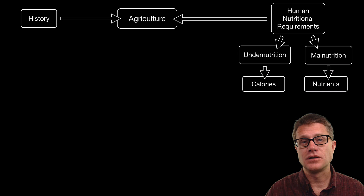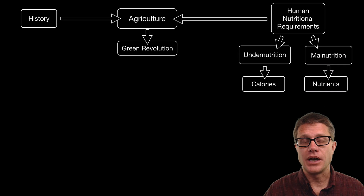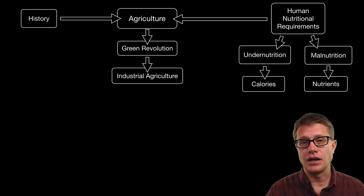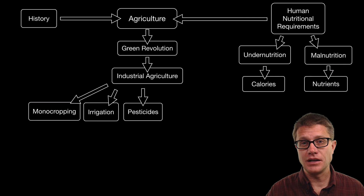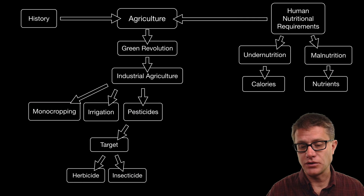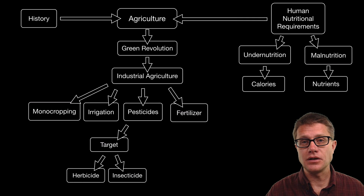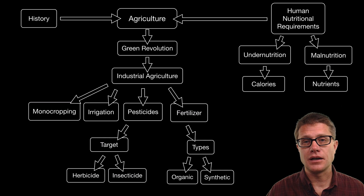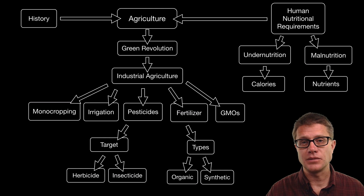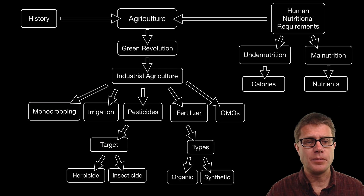With industrialization, as we had exponential growth in the population, we had to feed that population. And therefore we had the green revolution, which gave us industrial agriculture today. There are five characteristics of that. The first one is monocropping — planting just one crop type. We also have irrigation, the use of pesticides that target different things — the major ones are herbicides and insecticides — fertilizers, some of which are organic like manure but many are synthetic, and now the arrival of genetically modified organisms. All of these together have allowed us to create more food than ever before, but each of them have drawbacks.